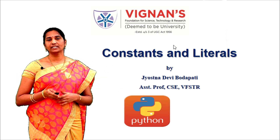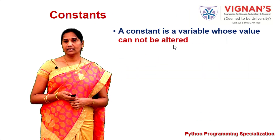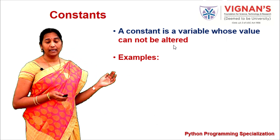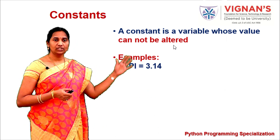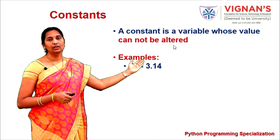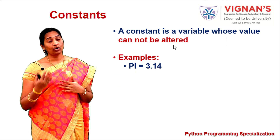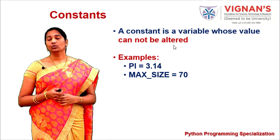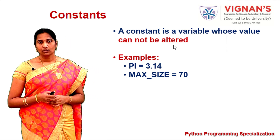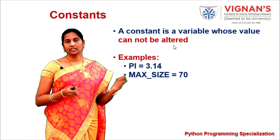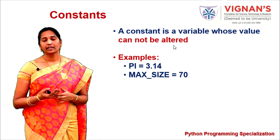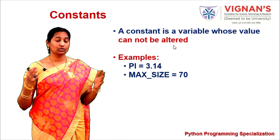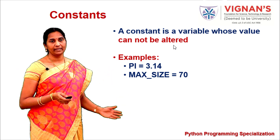A constant in Python is a variable whose value cannot be altered. For example, pi equal to 3.14 — pi is a variable which stores the value 3.14 and cannot be altered. MAX_SIZE is another constant whose value is fixed to 70, indicating the class size in a student application is restricted to 70 and cannot be altered during program execution.